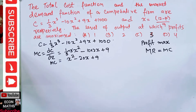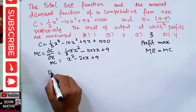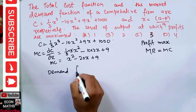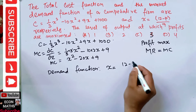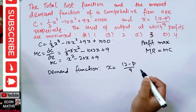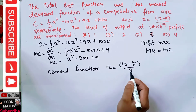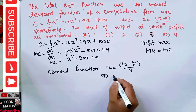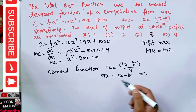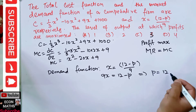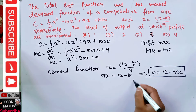The demand function is given as X = (12 - P)/9. We solve this for P: multiplying both sides by 9 gives 9X = 12 - P, which implies P = 12 - 9X. This is our inverse demand function.